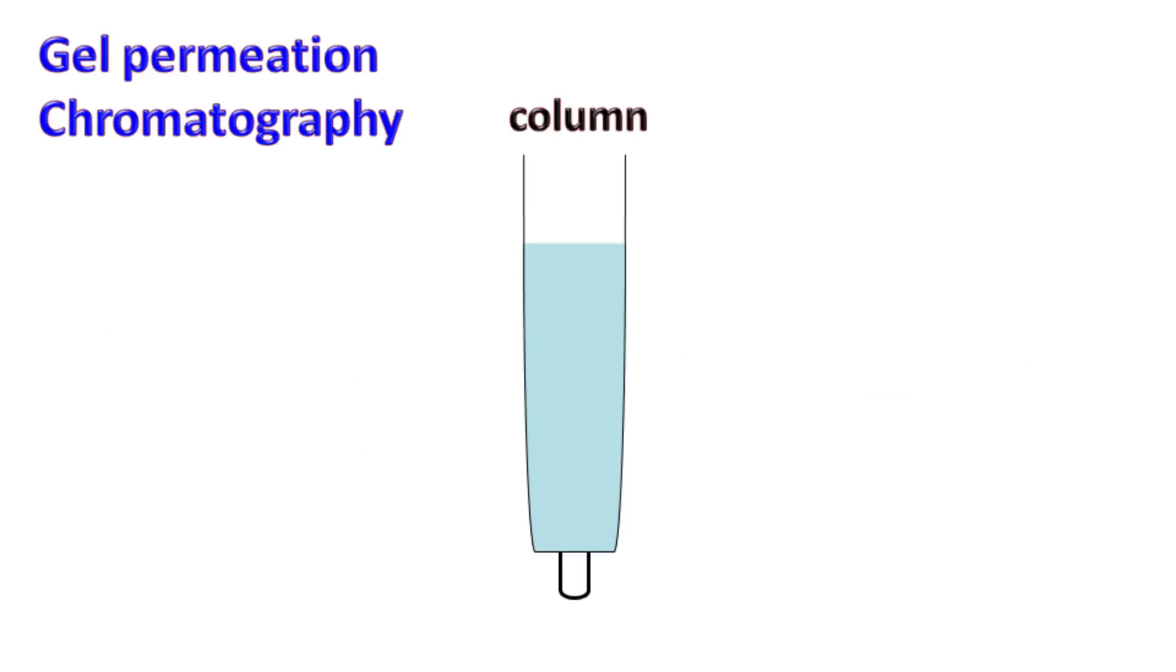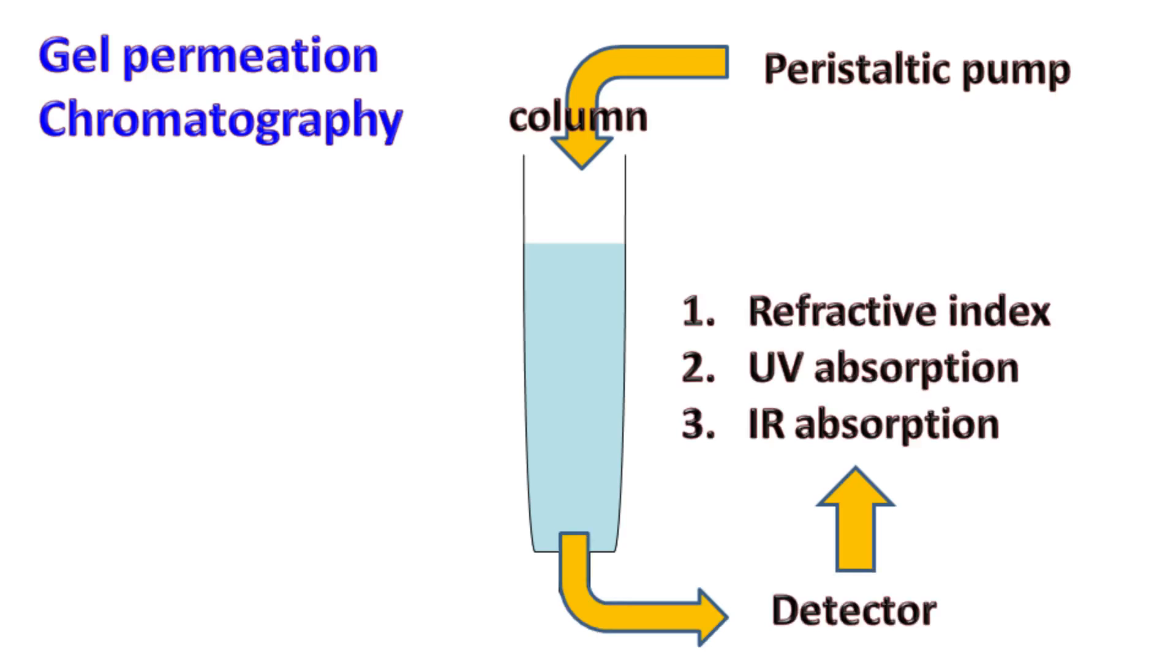The top of the column is attached with a pump which is continuously pumping the mobile phase in the column. The bottom of the column is attached with a detector. The detector can either be refractive index detector, UV detector, or an infrared detector. The choice of detector is based on the type of sample.